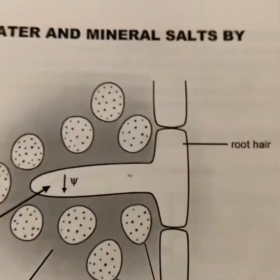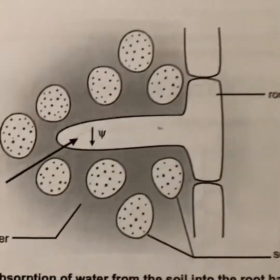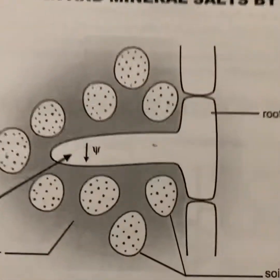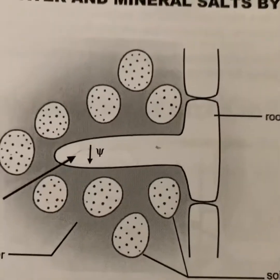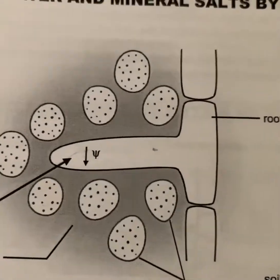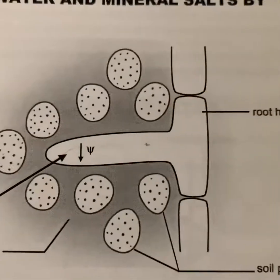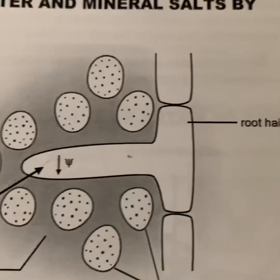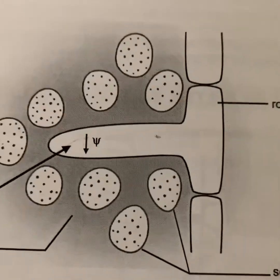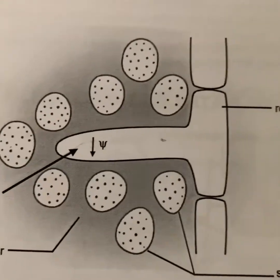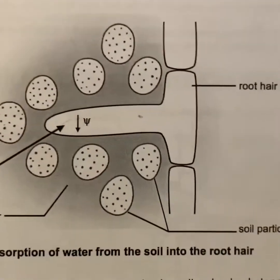If you're a bit confused, revise the structure of a cell from the earlier chapter so you can understand what the tonoplast is, what the vacuole is, and what a cell membrane is. Once the water gets into the vacuole, the vacuole swells and turgor pressure increases.